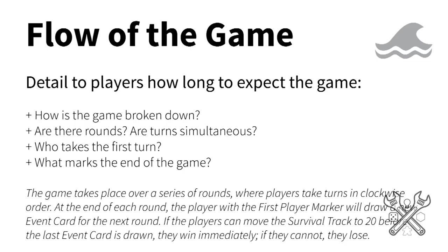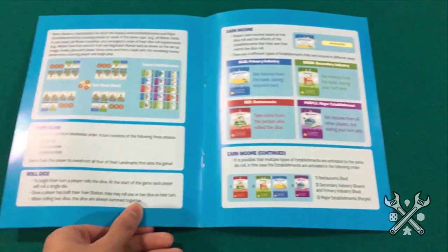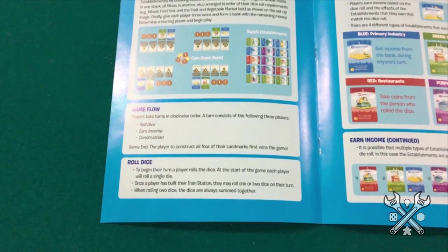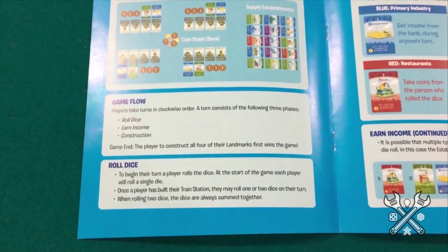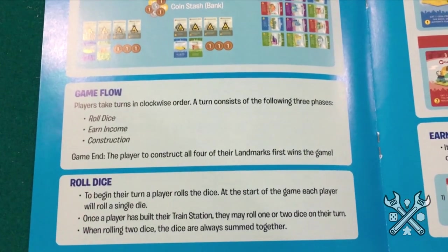The flow of the game is going to be the general expectation of how the game will work. Does it work in rounds or are turns simultaneous? Who takes the first turn and how long will players go until they reach the end of the game? This is a very general look at what the game is like before any specifics — it'll usually be a small section in the rulebook. I like to think of the flow of the game as another kind of overview section, a little more general than what you're about to get into with heavier details, so as not to overload your players initially.